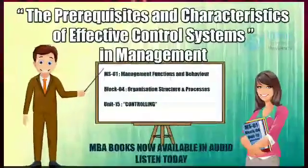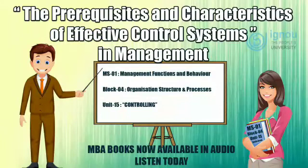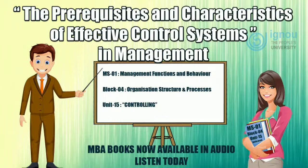The Prerequisites and Characteristics of Effective Control System. The major prerequisites of control are two: a plan and a structure.